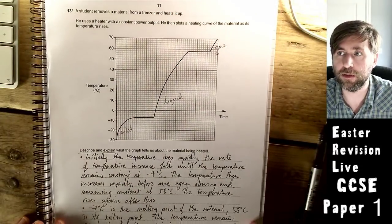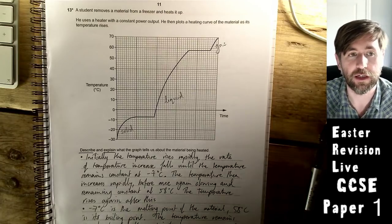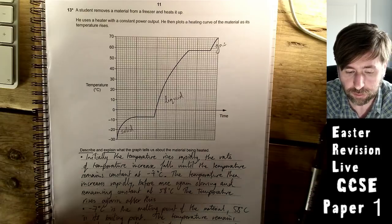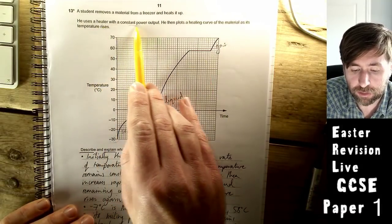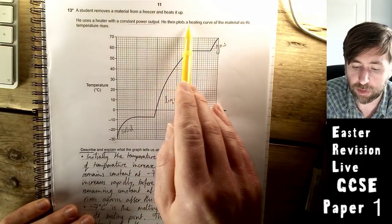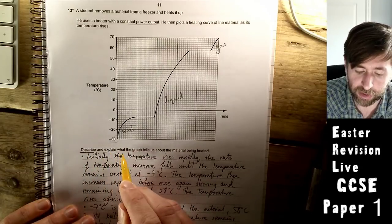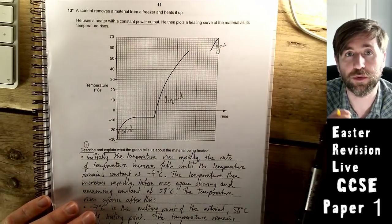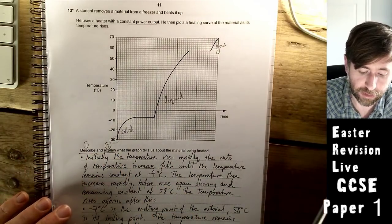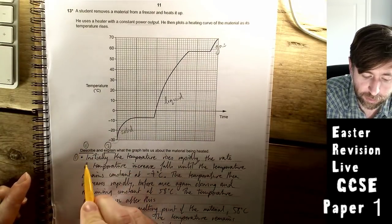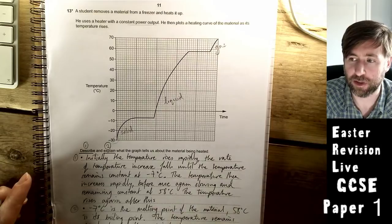One of the dreaded longer written questions. There's one in the description about longer written questions. A student removes a material from a freezer and heats it up, so it starts at minus 30. They use a heater with a constant power output, so the rate of energy transfer is the same. Then plots a heating curve of the material as its temperature rises. Describe and explain what the graph tells us. Great question for making sure you know the difference between describe and explain. Describe is what is it like, explain is why is it like it is.